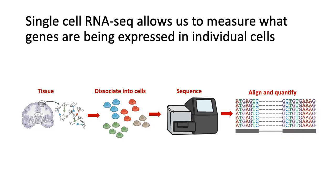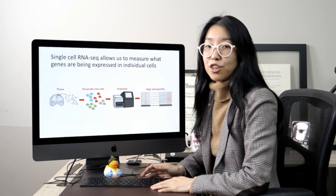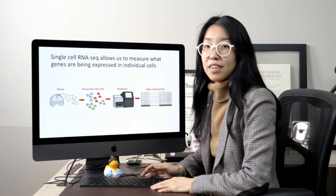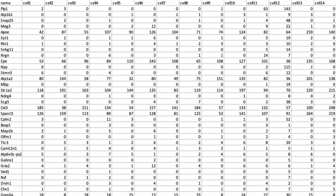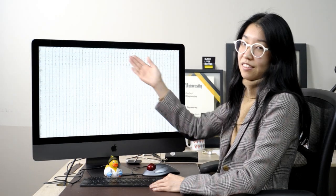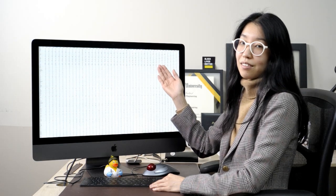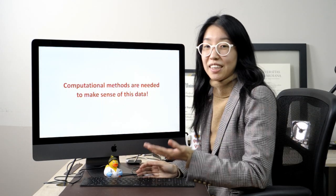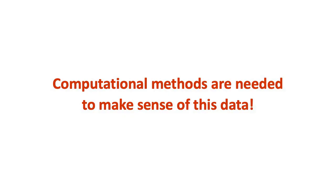Single-cell RNA sequencing is one technology that's enabling researchers to measure what genes are expressed in individual cells. Using single-cell RNA sequencing, we can now quantify the expression magnitudes for thousands of genes in the transcriptome across thousands to millions of single cells. And of course, given such big data, we really need computational methods to be able to make sense of it all.